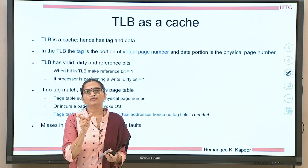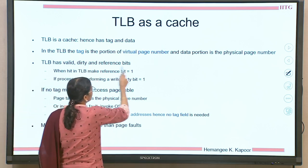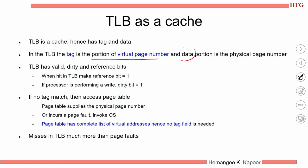The tag is a portion of the virtual page number, and the data is the physical page number. It has a valid bit, dirty bit, and reference bit for corresponding purposes. If there is no tag match — a TLB miss — go to the page table. The page table gives you the new physical page number. In case the page table does not have the page, you incur a page fault, in which case invoke the operating system. Once the page comes into the RAM, update the page table with the corresponding PPN entry.